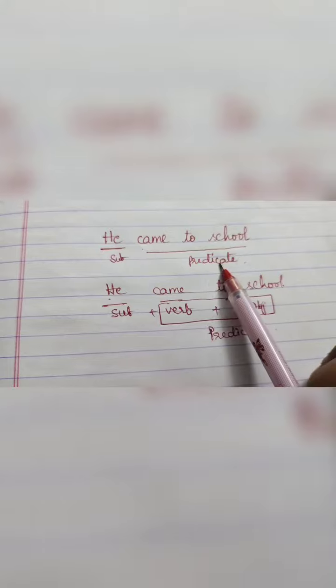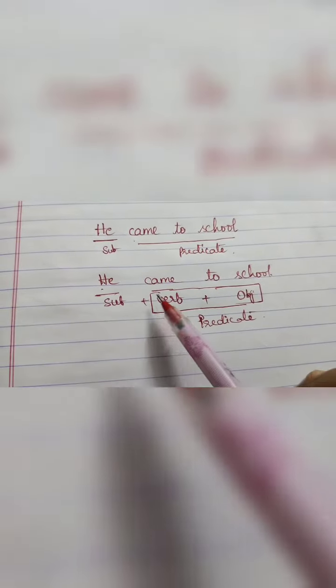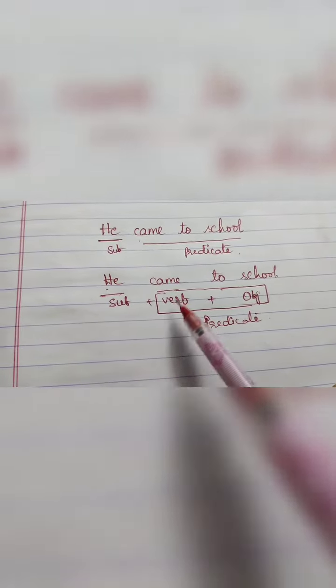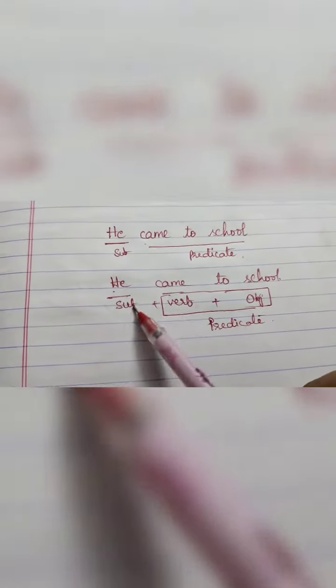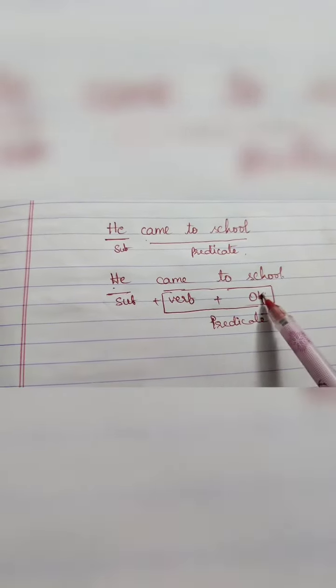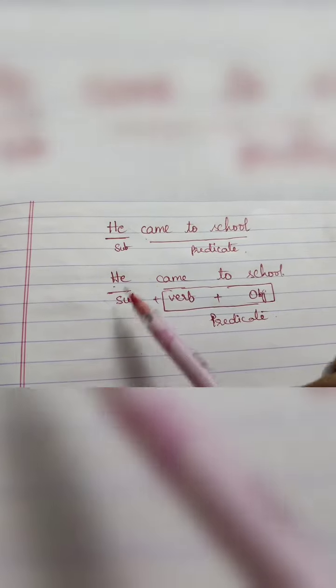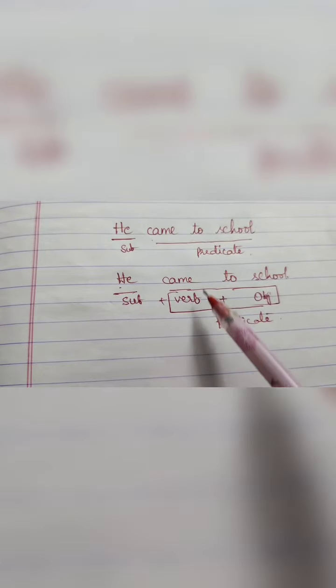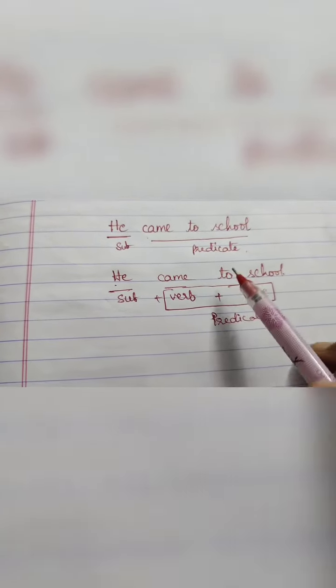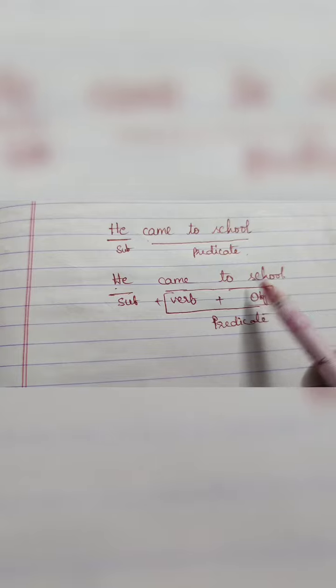Predicate consists of the verb because the regular structure is subject plus verb plus object. 'He' is the subject because he does the action, the action word is the verb, and the result or effect can be called the object.